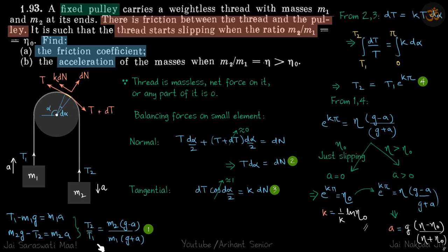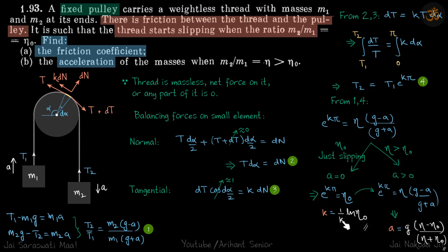Now we can substitute the ratio t2 by t1 from the equations of motion, giving: e raised to the power k*pi equals eta times (g minus a) by (g plus a), where eta is m2 by m1. For Part 1, when the ratio m2 by m1 is eta naught and it just starts slipping, acceleration is zero. So the equation reduces to e raised to the power k*pi equals eta naught, giving k equals (1 by pi) times ln(eta naught). That is the answer to Part 1.